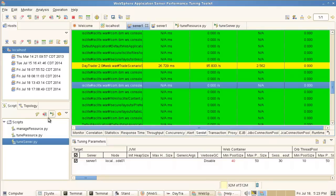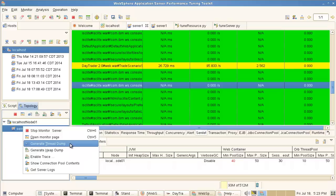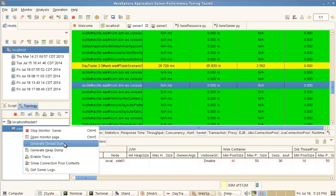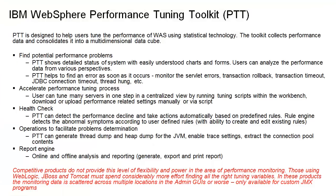You can expand these to drill down into specifics. I can also trigger a thread dump or heap dump, then get the server logs and analyze what's going on using other tools provided with IBM Support. In summary, what do you get with the Performance Tuning Toolkit? The toolkit consolidates all data and combines it into a multi-dimensional data cube, allowing you to find potential performance problems relatively easily. It shows very detailed data about performance-related counters in charts and tables so you can analyze and drill down from various perspectives.